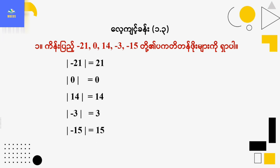Modulus of 0 equals 0. Modulus of 14 equals 14. Modulus of minus 3 equals 3. Modulus of minus 15 equals 15.